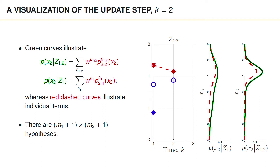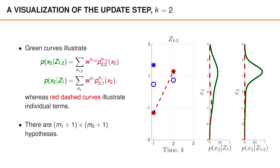The most likely hypothesis is that the object was detected at both time instances and that the object measurements are 1.7 at time 1 and 1.3 at time 2. The hypotheses that involve the measurements at -1.3 are very unlikely. This is partly due to the prior mean at time 1 being 0.5, and partly because the measurements at -1.3 and 1.3 are far apart. More specifically, the predicted likelihood for the measurement at time 2 is very small if we assume that -1.3 was the object detection at time 1.